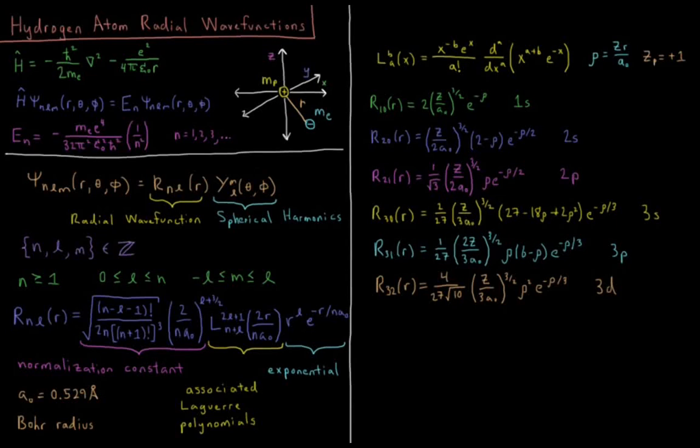This video will discuss the radial wave functions of the hydrogen atom quantum mechanical model system. Our model for the hydrogen atom has a proton of mass MP which is fixed at the origin of our coordinate system.